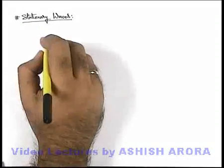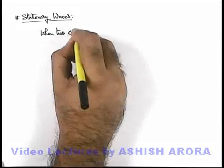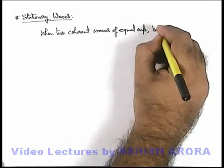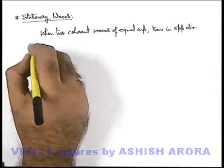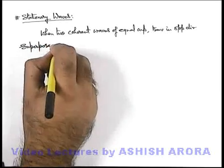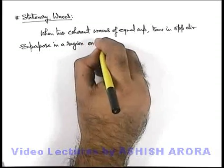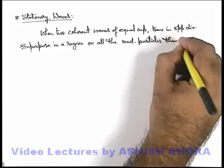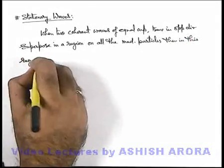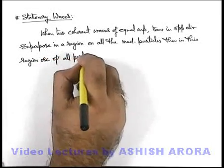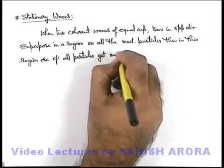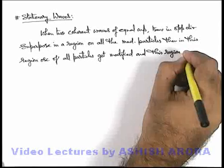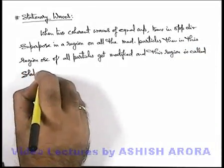First, let's write down something about stationary waves. When 2 coherent waves of equal amplitude travelling in opposite directions superpose in a region on all the medium particles, then in this region the oscillation of all particles gets modified, and this region is called stationary waves.